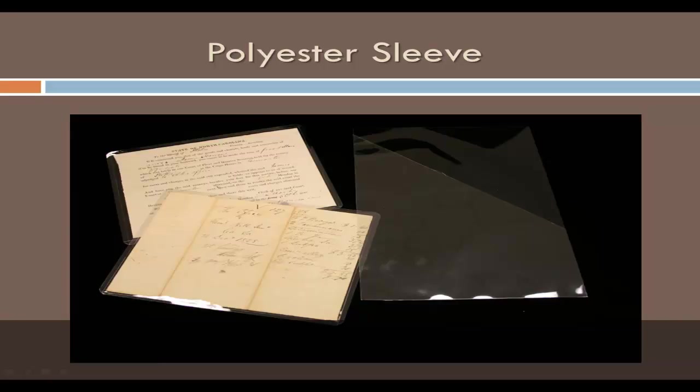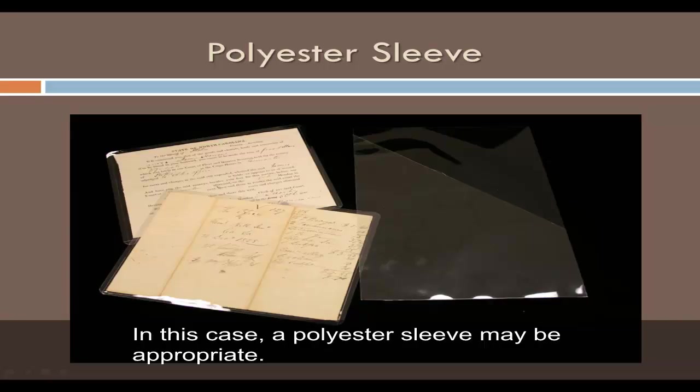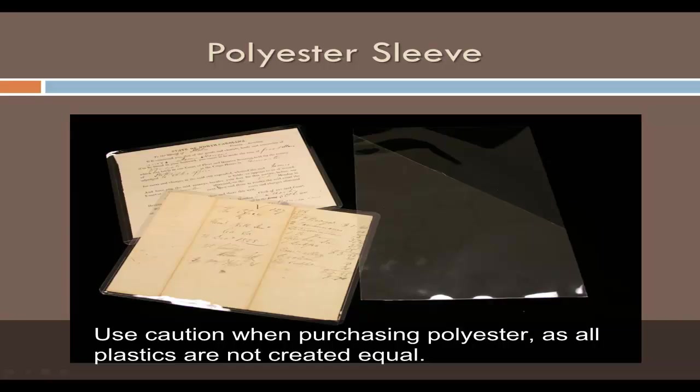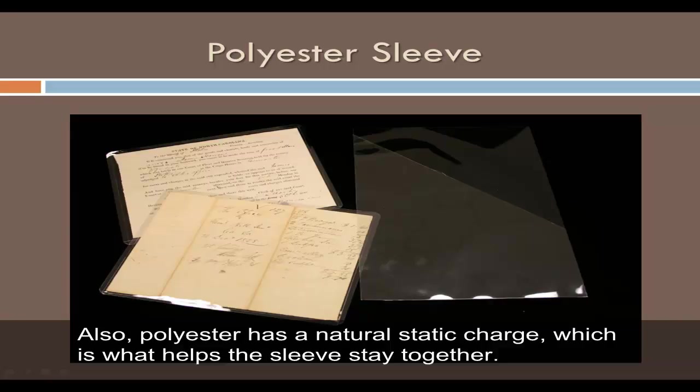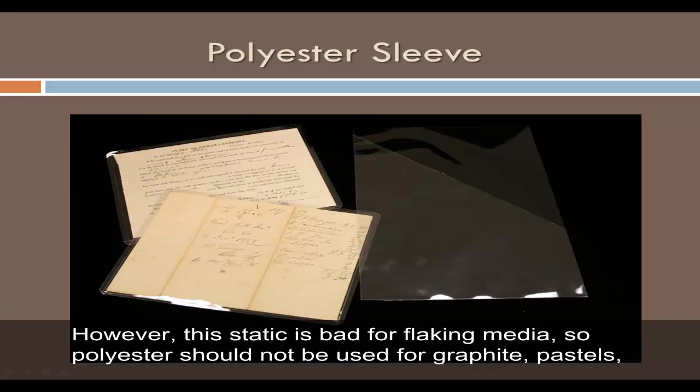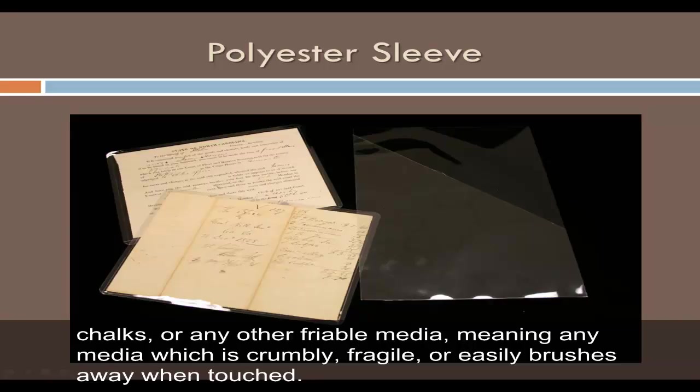Some people prefer to be able to see objects easily. In this case, a polyester sleeve may be appropriate. Use caution when purchasing polyester, as all plastics are not created equal. The polyester should be inert, contain no plasticizers, and have no coatings. Also, polyester has a natural static charge, which is what helps the sleeve stay together. However, this static is bad for flaking media, so polyester should not be used for graphite, pastels, chalks, or any other friable media — meaning any media which is crumbly, fragile, or easily brushes away when touched.